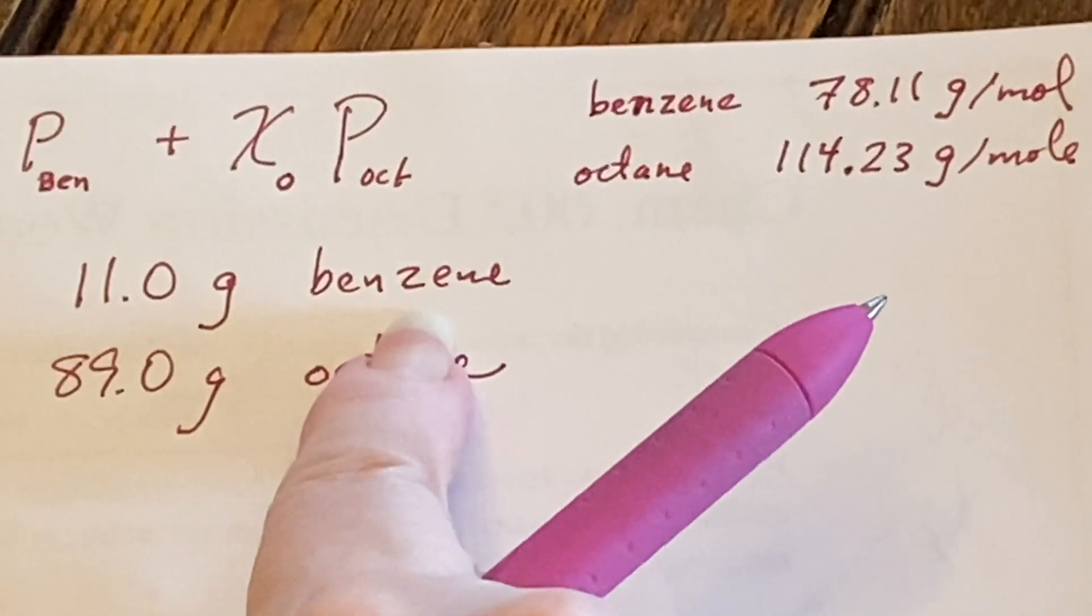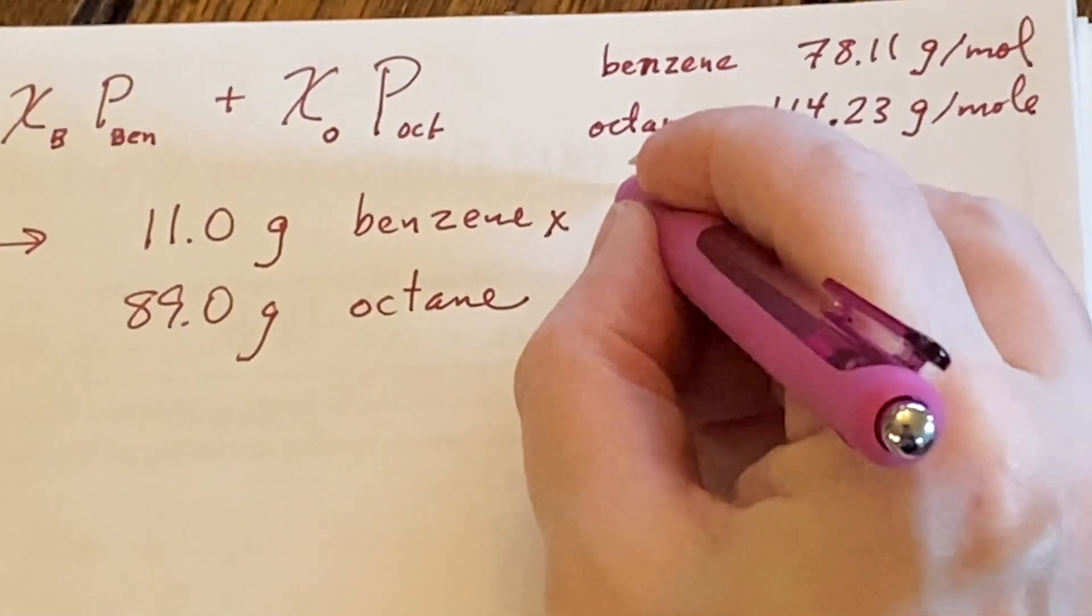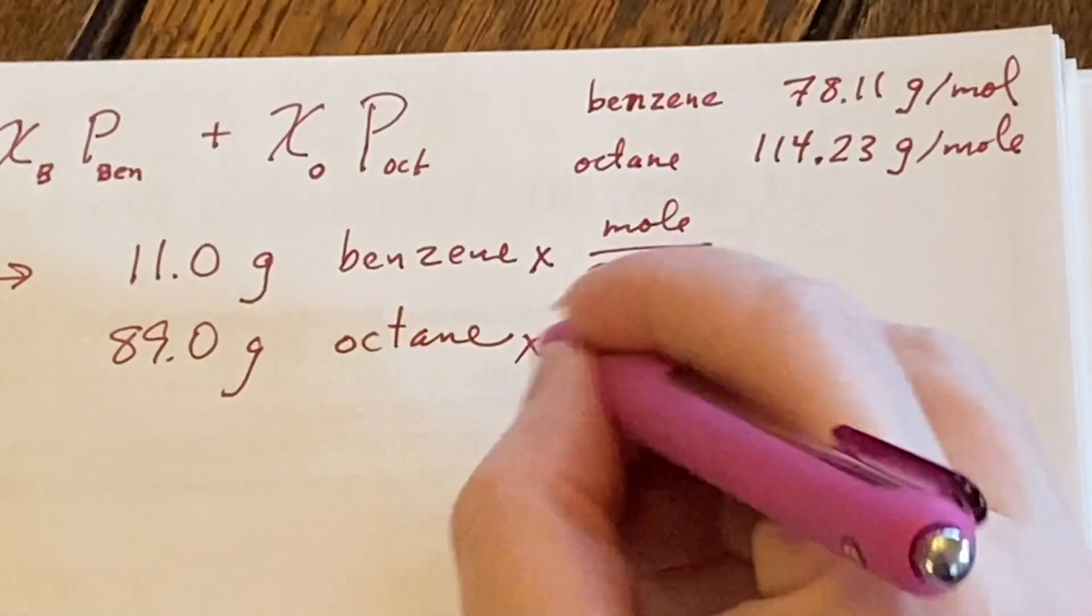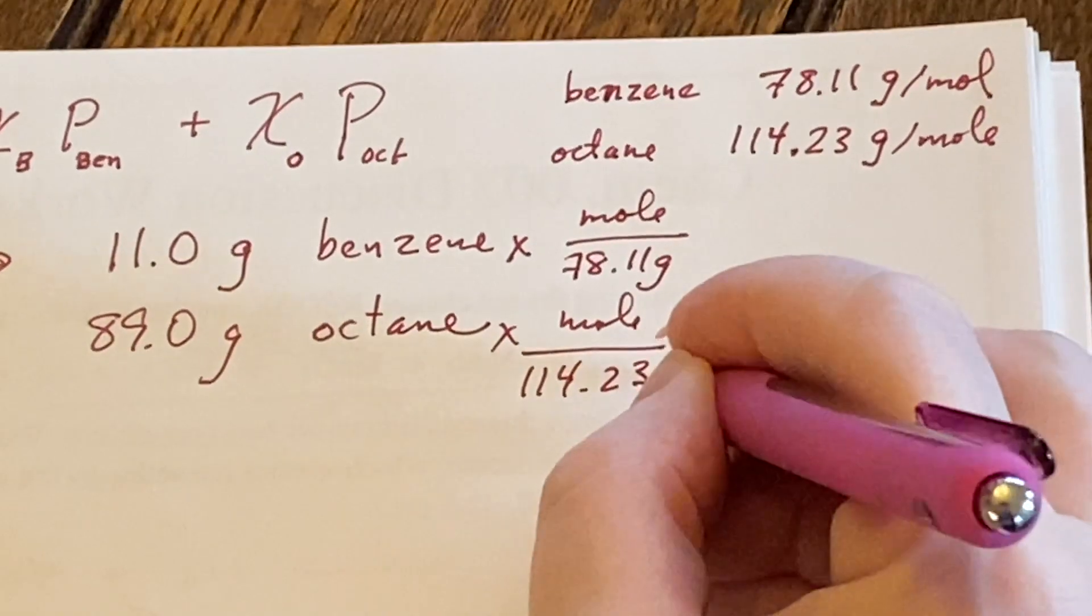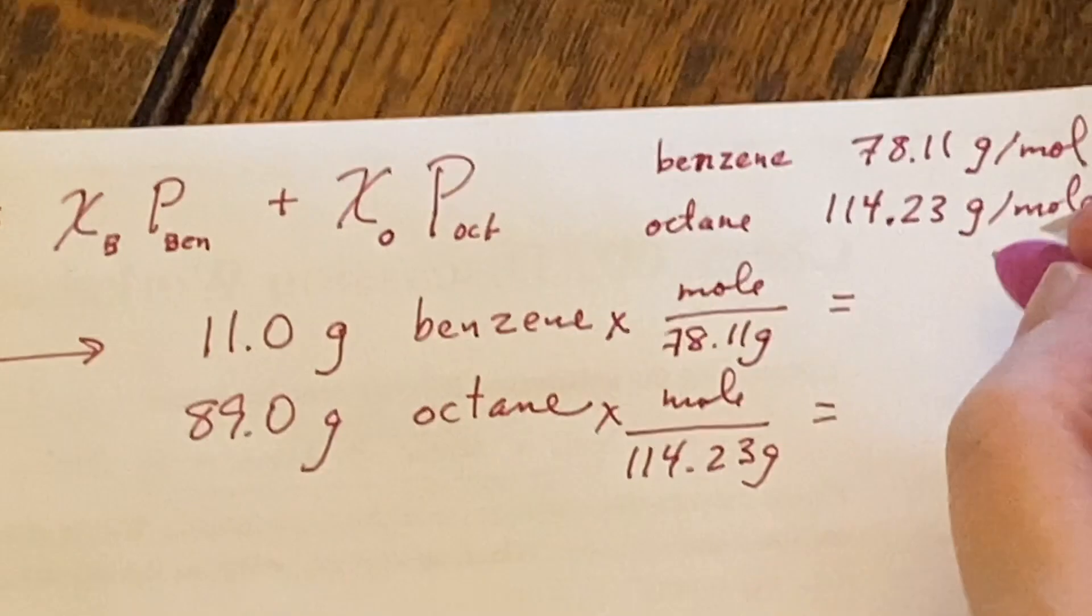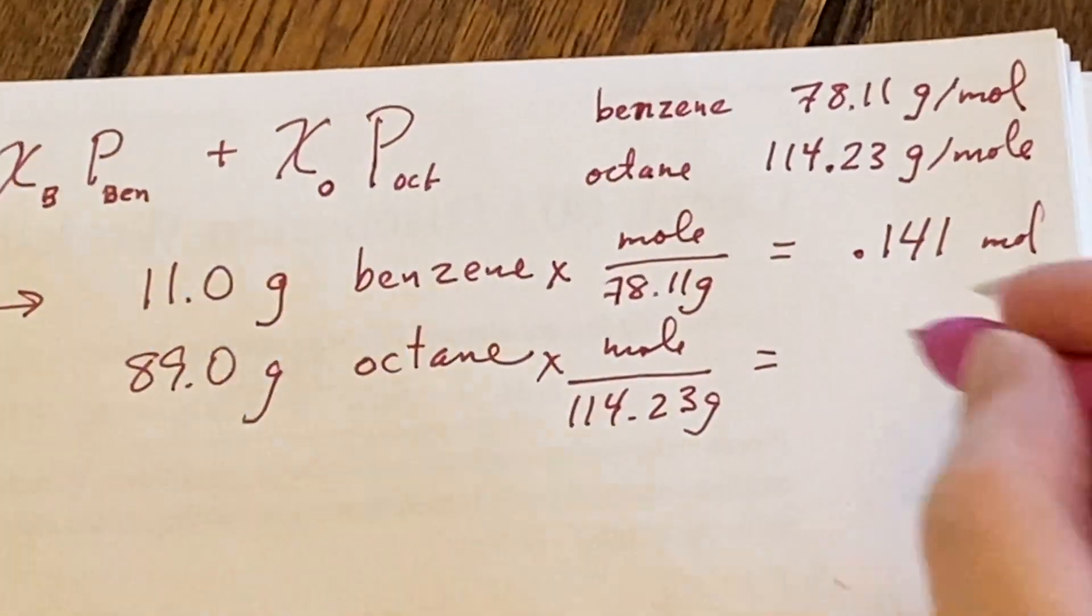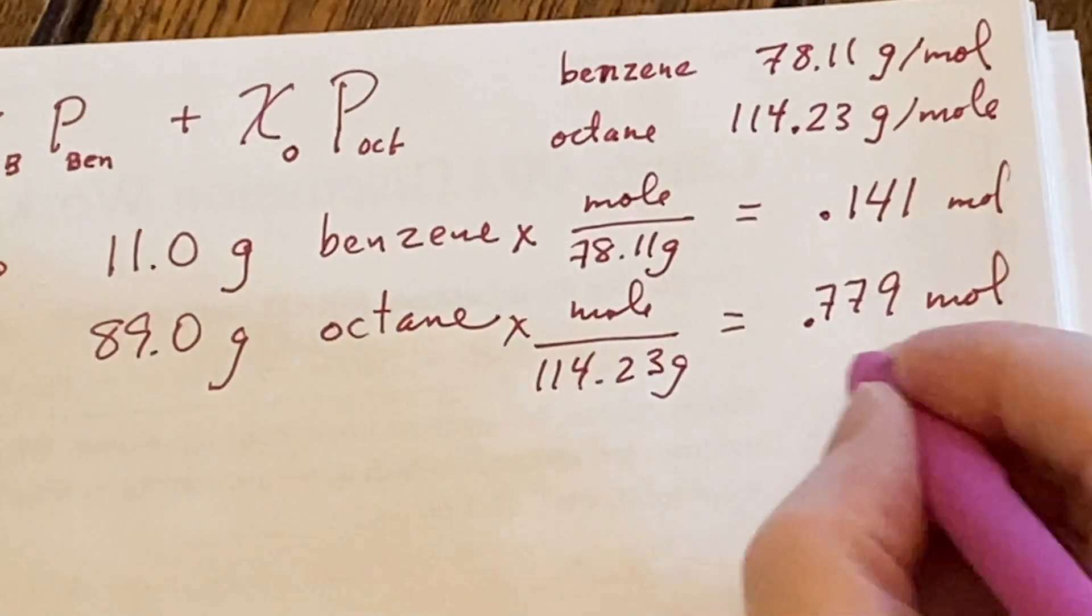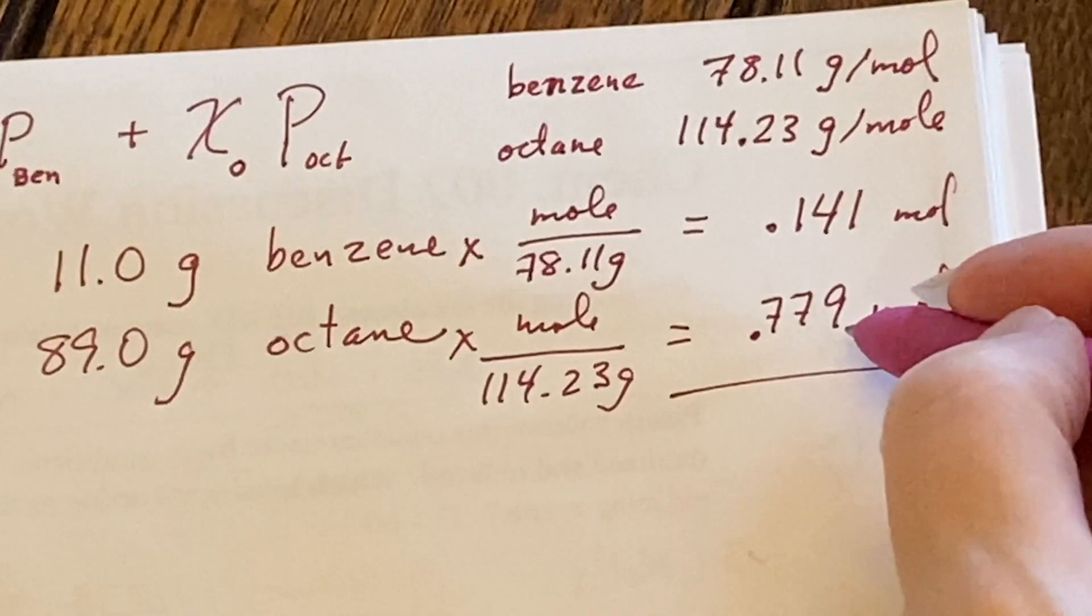So now that I know that there's this many grams and I know the molar mass, then I can work out how many moles I have. One mole would be the 78.11 grams in this case. And one mole would be the 114.23 grams in this case. And when I work those out, I get that this one is 0.141 moles and that this one is 0.779 moles.